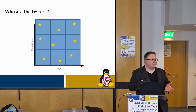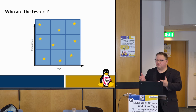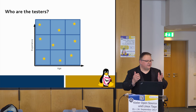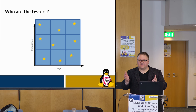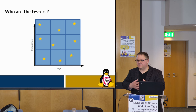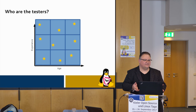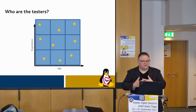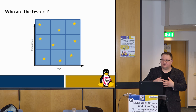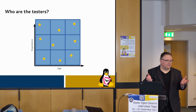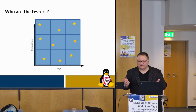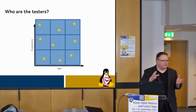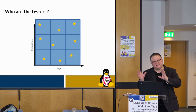Picking the people who are going to help you in your test is also important — back to the question of who are your users. If you're doing a usability test on GNOME Builder, a development environment, you probably don't want people who only do graphics design, because they don't do coding. Similarly, if you're testing GIMP, you probably don't want people who've never done graphics design. You need testers that sort of match your program — they don't have to be an exact match, but they need to be close.